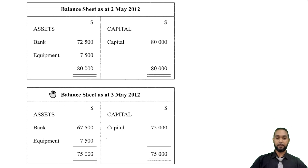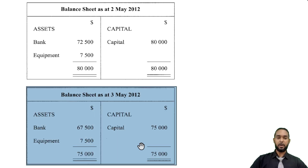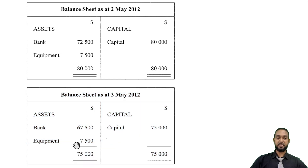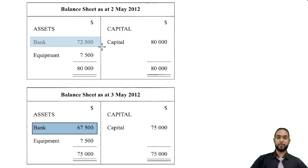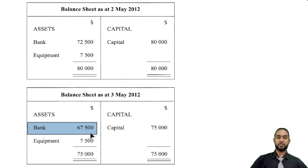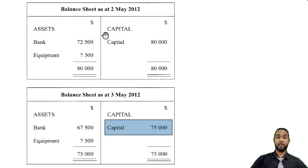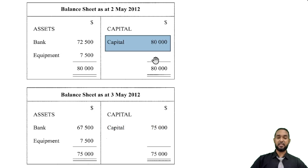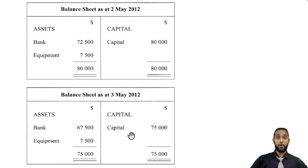Now on the 3rd of May, we have yet another balance sheet. What we're seeing here is that the equipment is still there at $7,500, but the bank has now decreased from the balance on the 2nd of May. To go down from $72,500 to $67,500 is a decrease of $5,000, which is mirrored on the right hand side. On the 2nd of May we had $80,000 in capital, and we see here that capital went down from $80,000 to $75,000. Capital goes down either when the business makes a loss or when the owner withdraws money or any resource for personal use, which is called drawings.